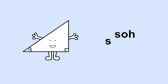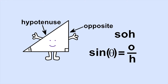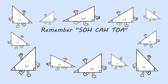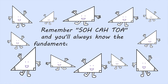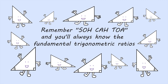The letter S and O stands for sine — between the O and H put a dividing line. This means for sine, the ratio you use is opposite over hypotenuse. Remember SOHCAHTOA and you'll always know the fundamental trigonometric ratios.